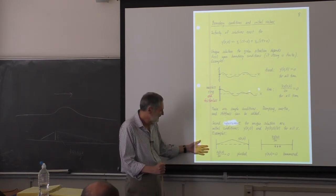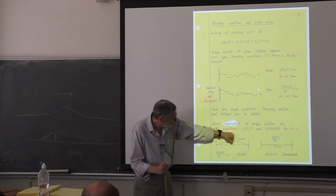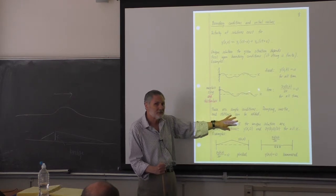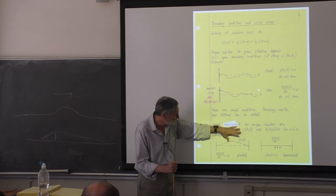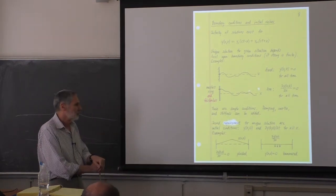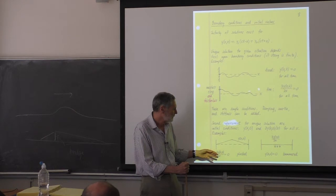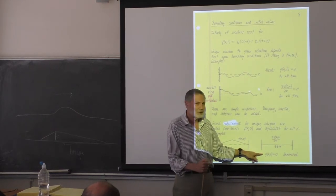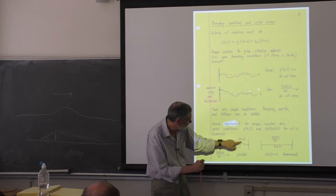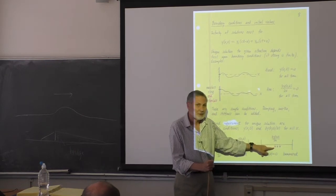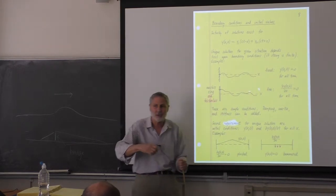Now let's get into the next section. We want to solve: a half-infinite string where we drive the end. There will be a transverse force varying sinusoidally on the massless, frictionless ring. We'll go complex right from the beginning because it makes life much easier — the actual force is the real part. Tension and mass per unit length are constant in our approximation of small displacements and small slopes.